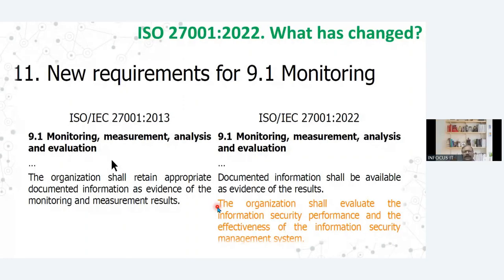Then in clause number 9, the clause is further fine tuned and an additional line has been added that says: the organization shall evaluate the information security performance and effectiveness of the information security management system. This is the additional line that has been added in clause 9.5.1, which is monitoring, measurement and analysis. Basically under clause number 9 we do internal audit and all that.